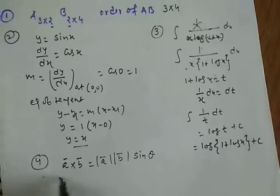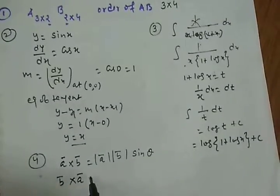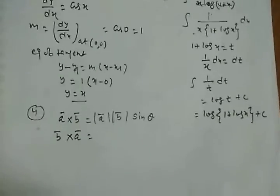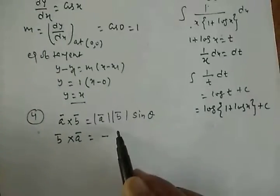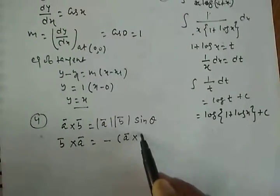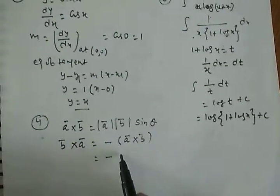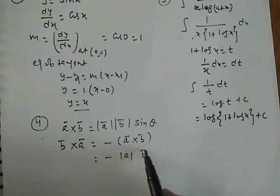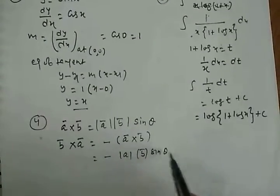Now what is b cross a? When we calculate b cross a, it is minus of a cross b, that is minus magnitude of a, magnitude of b, sine theta.